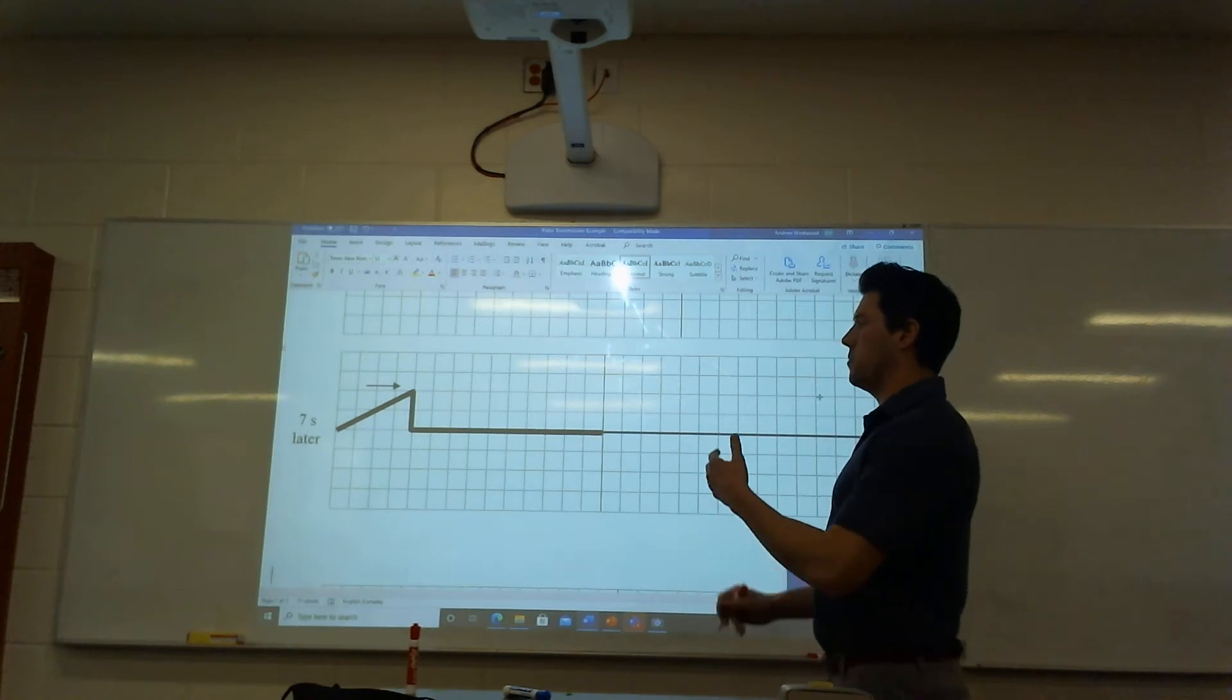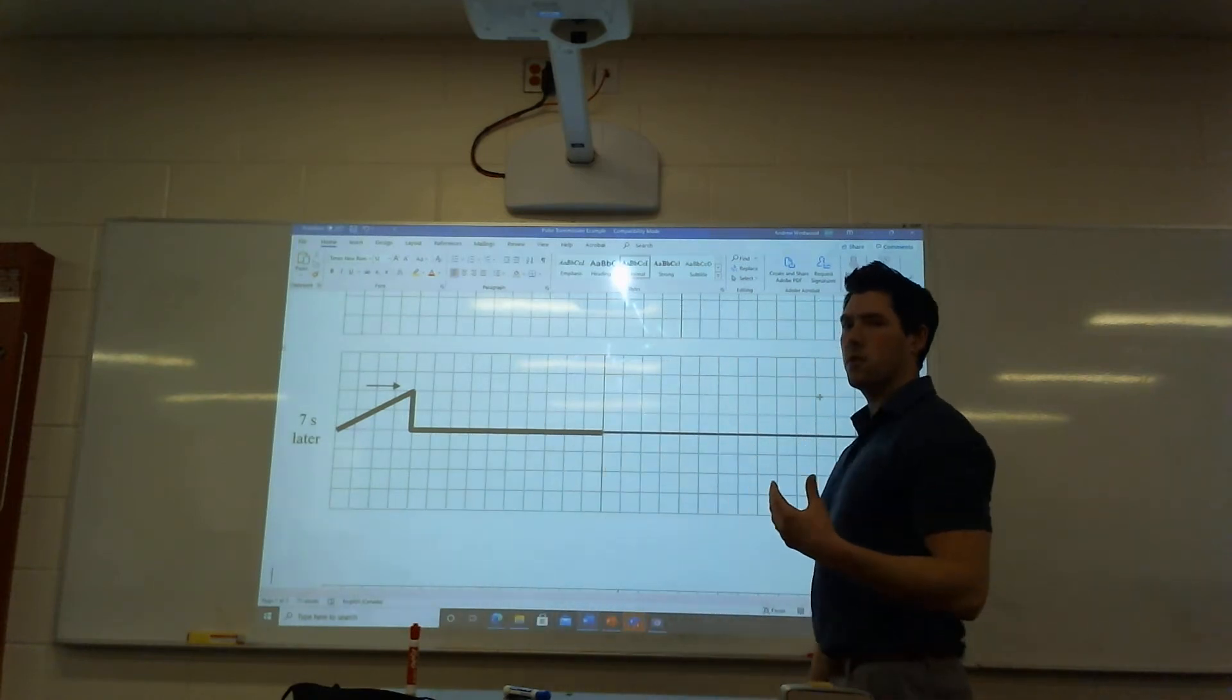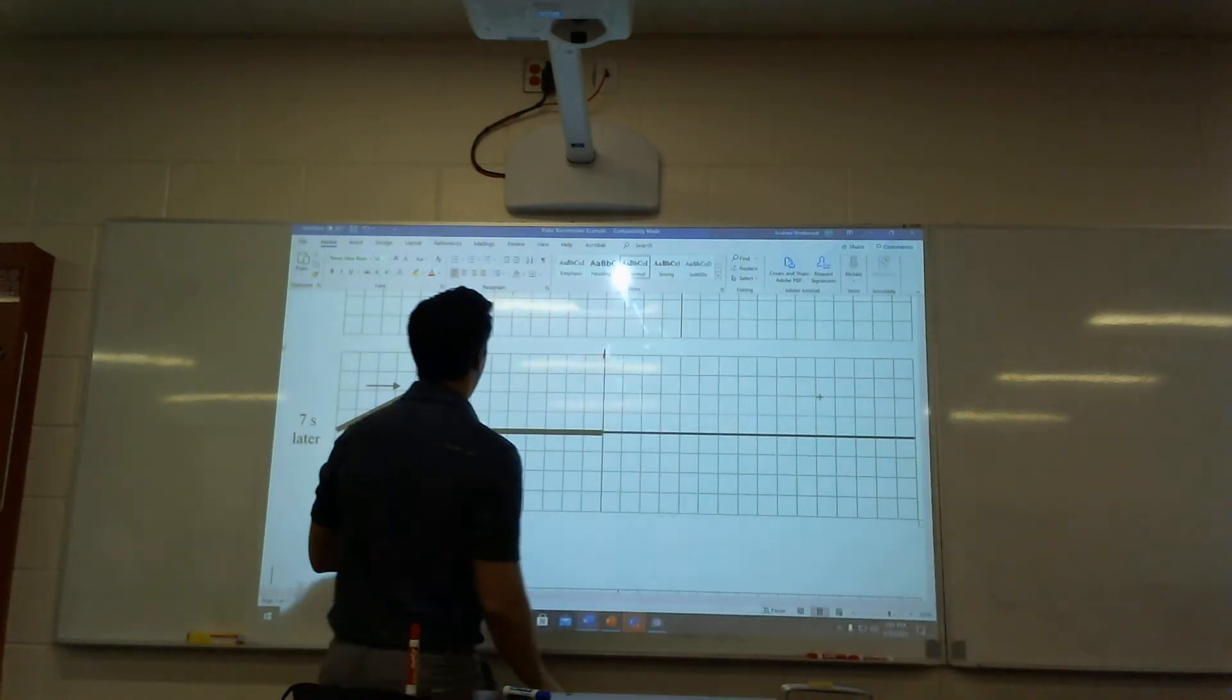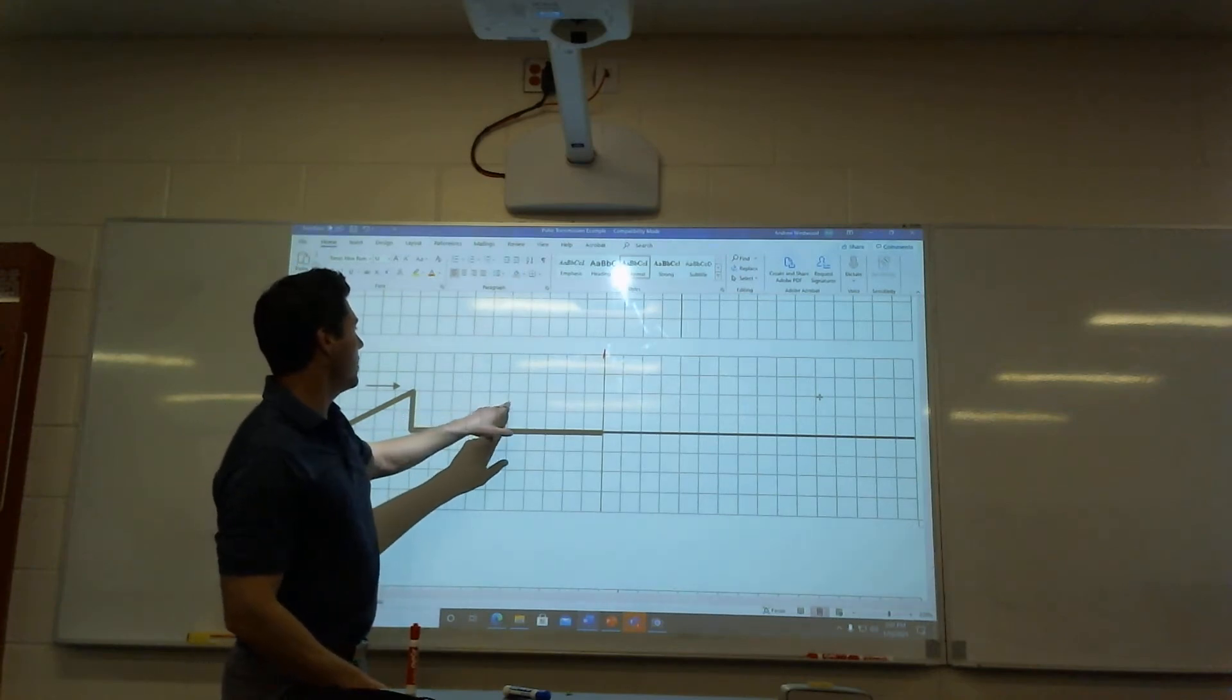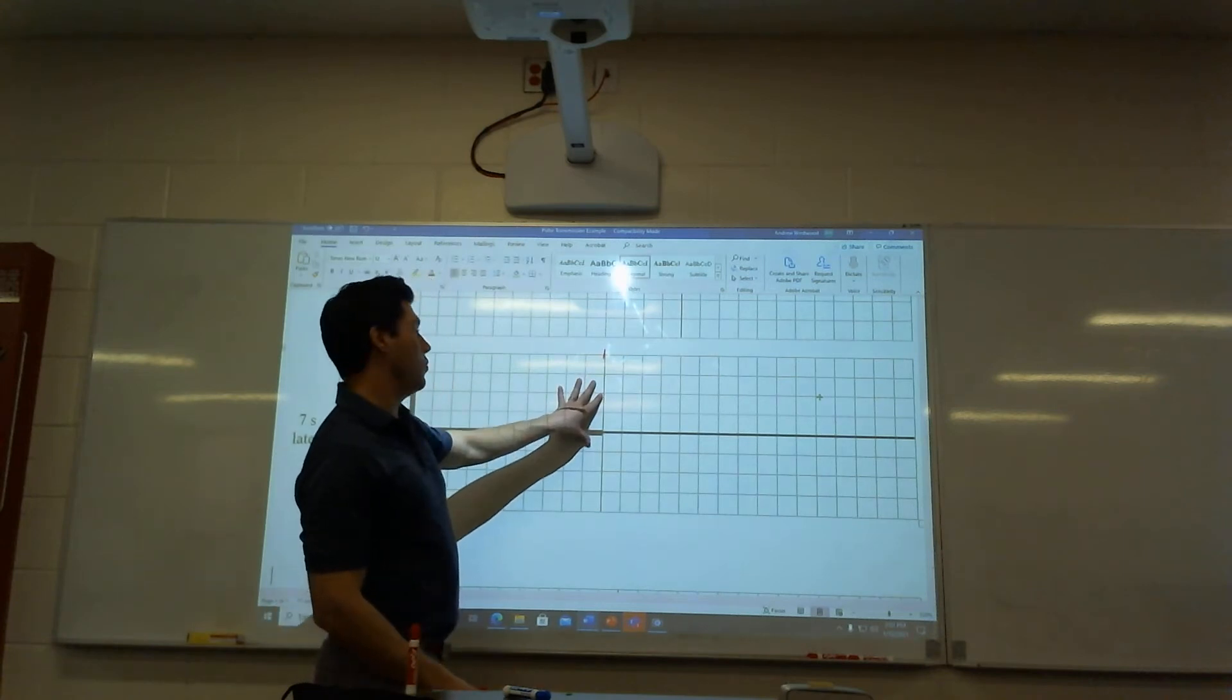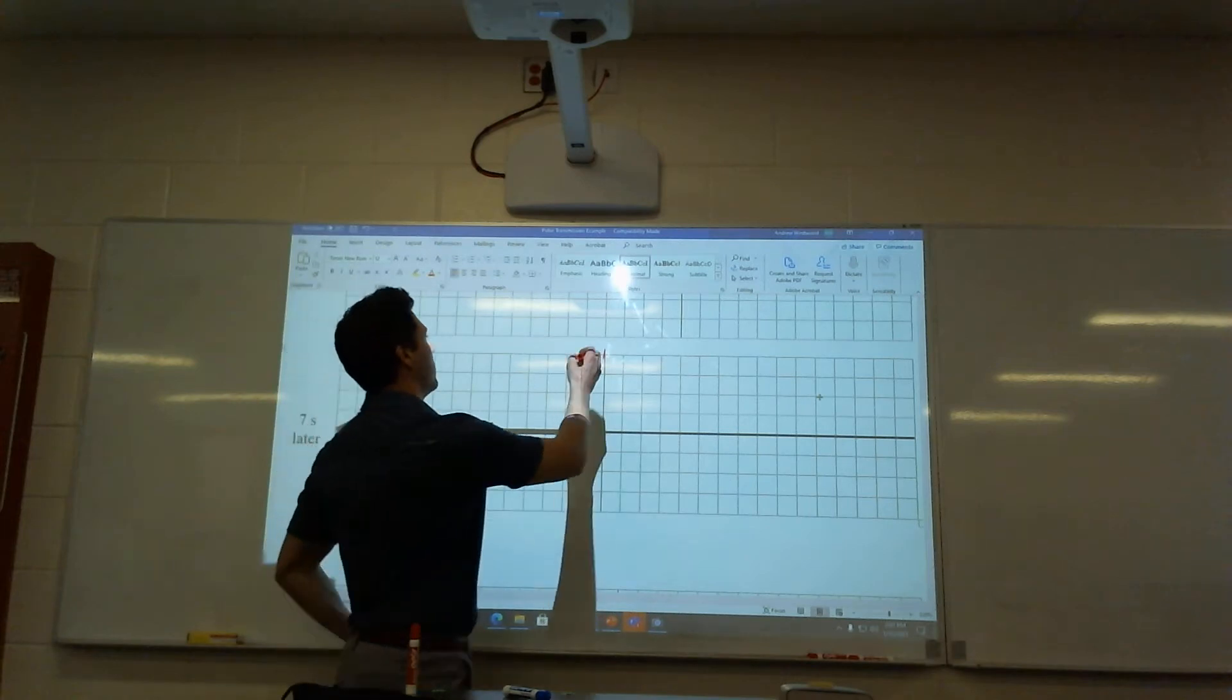And so it's going to ask basically show this wave seven seconds later. So again, the first thing you're going to want to do is figure out how many seconds it took to get to right here. So let's travel our count of boxes. One, two, three, four, five, six, seven, eight, nine, ten. Okay, so ten boxes to here, which means because this is traveling at two boxes per second, it took five seconds to get out here.